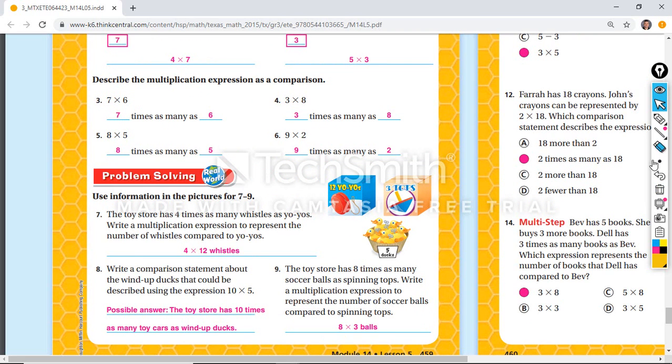The next one is logic. We're using logic here. So Tony, the toy store has four times as many whistles as yo-yos. So these are the yo-yos. There's 12 of them. So your multiplication expression will be four times as many whistles. And you get the number four times as many whistles as yo-yos.